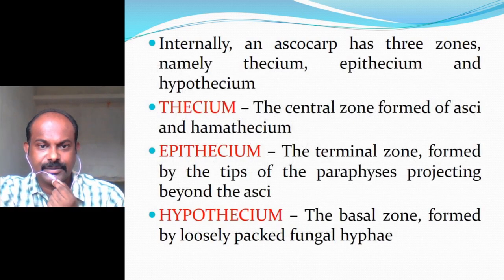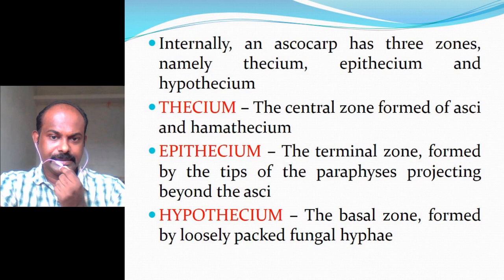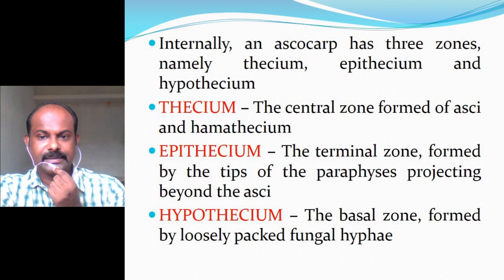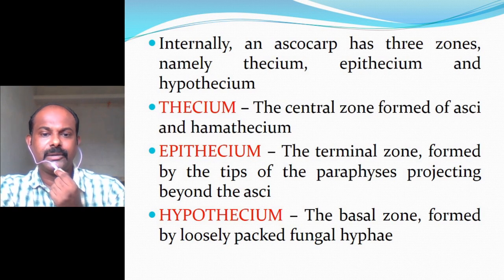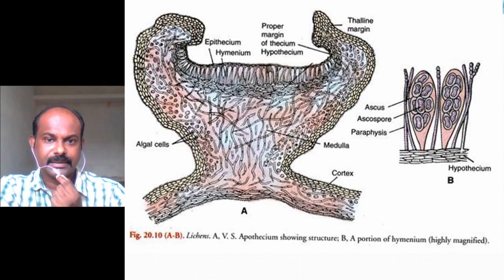Internally, an ascocarp has three zones: thecium, epithecium, and hypothecium. Thecium is the central zone formed of asci and hamathecium. Epithecium is the terminal zone formed by the tips of paraphyses projecting beyond the asci. Hypothecium is the basal zone formed by loosely packed fungal hyphae. This figure of the apothecium shows the epithecium, hymenium, and subhymenium.